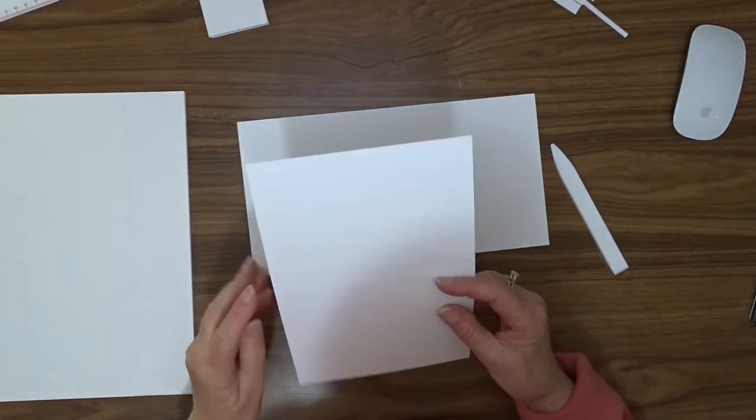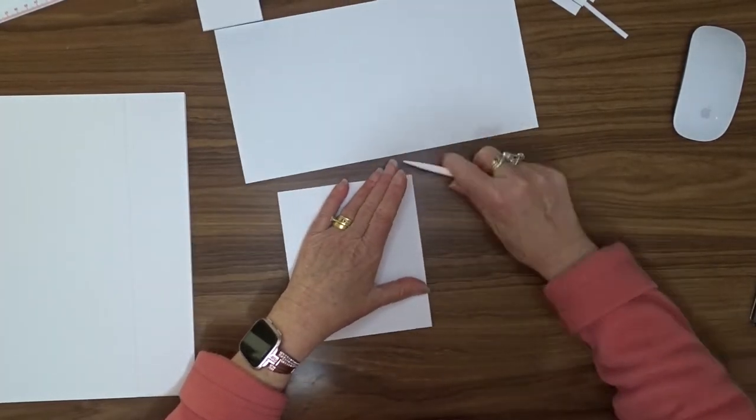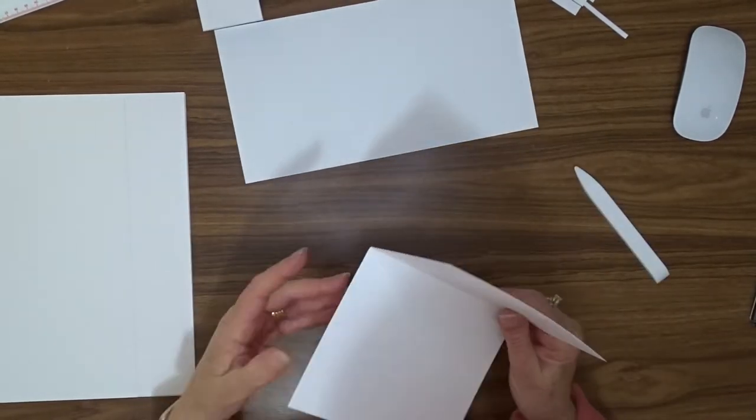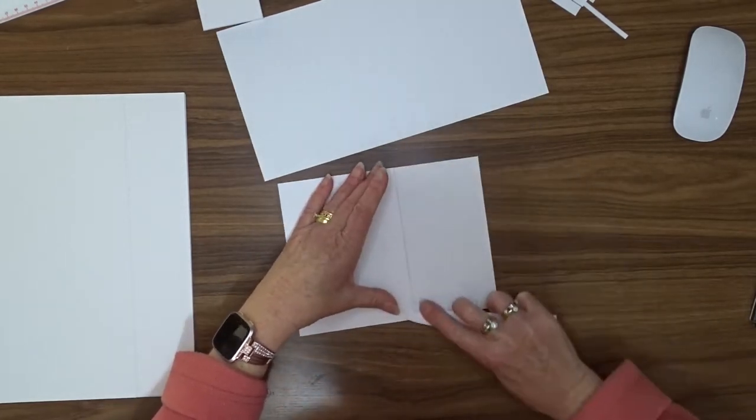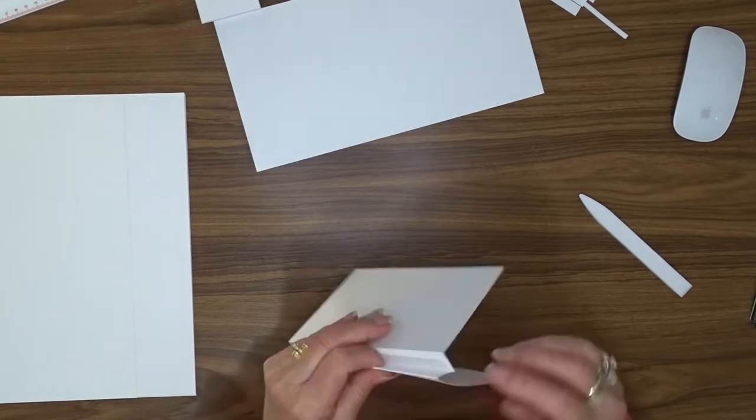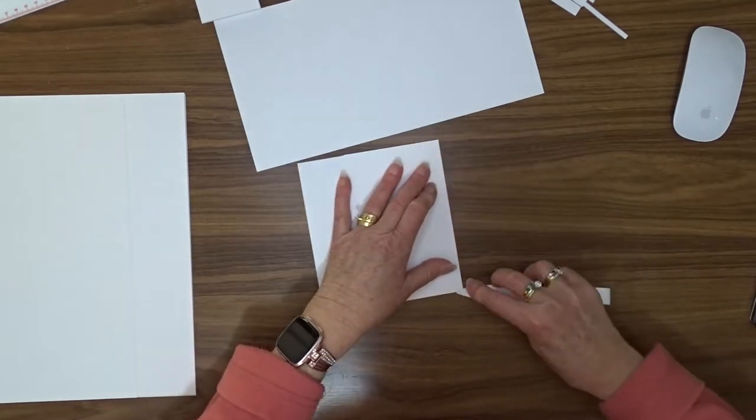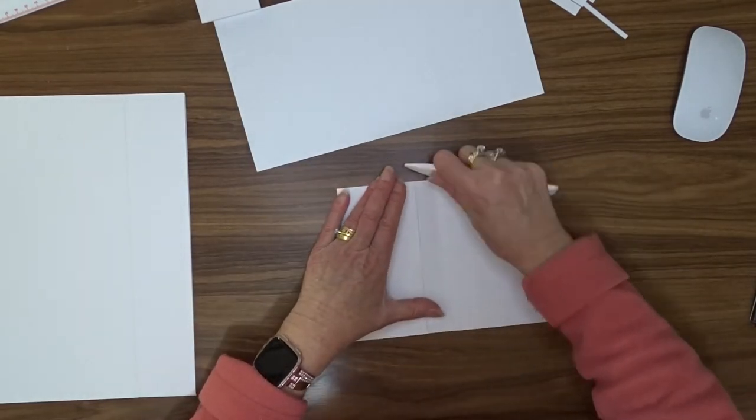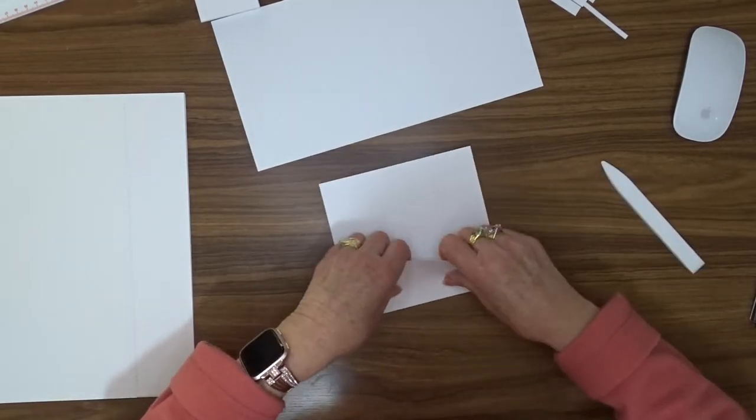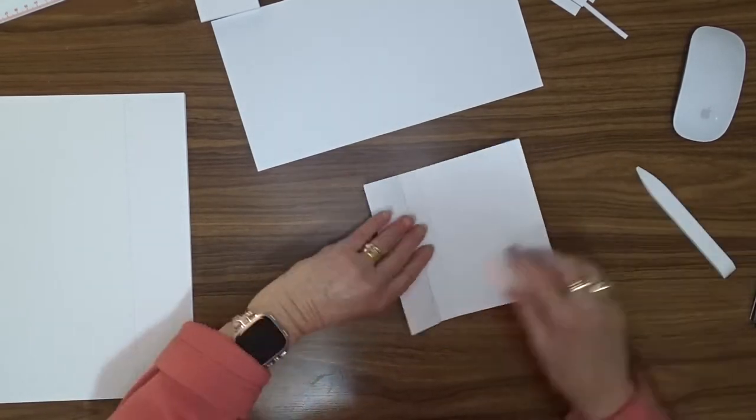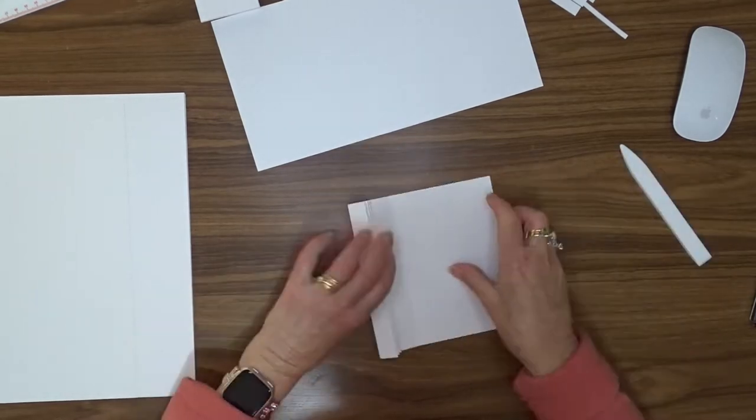So we're going to start folding mountain valley, mountain valley. So starting with the first score line near the large section that's left over, so the large flat area where there's no scoring. That is your mountain fold. And then fold all the way through the rest of the score line. So mountain valley, mountain valley. So we're making an accordion.